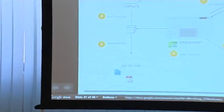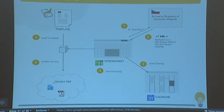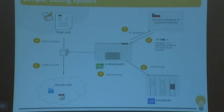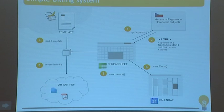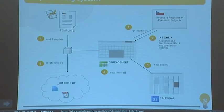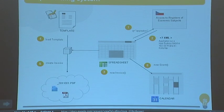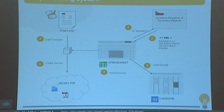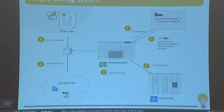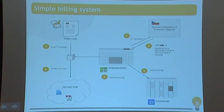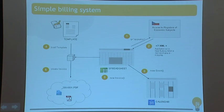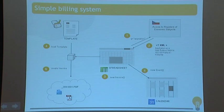Here is a case study — a simple invoicing system we use internally. When we create a new invoice, we need to find information about the client firm. There's an input box where you enter the firm name, and similar to the Oracle of Bacon request, we query ARES — a database of all Czech companies — which is backed by XML.